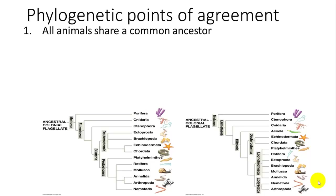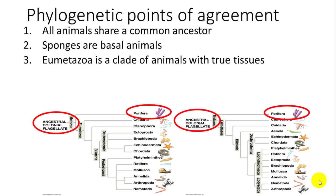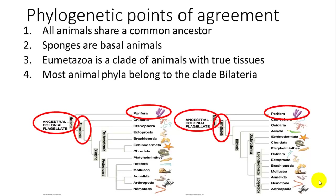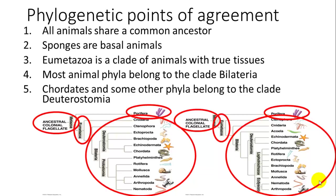Different hypotheses share general points of agreement. First, all animals share a common ancestor — a colonial choanoflagellate protist ancestor. Sponges are our basal animals; they don't have tissues and are kind of the outgroup of other animals. Eumetazoa is a clade of animals with true tissues. Most animals belong to the clade Bilateria. Finally, chordates and some other phyla belong to the clade Deuterostomia.